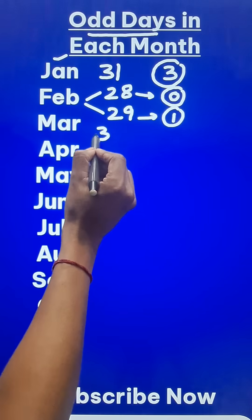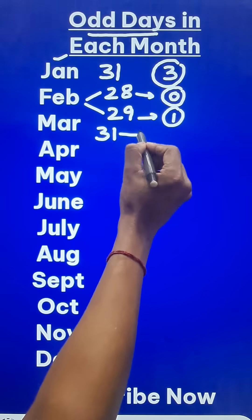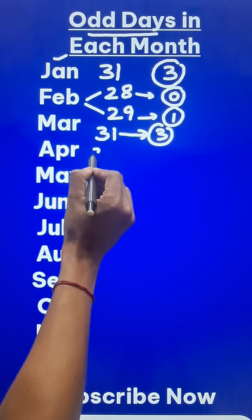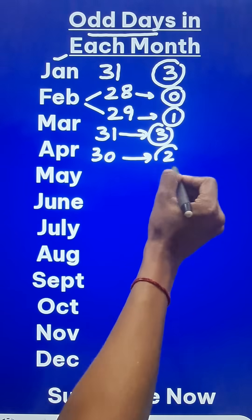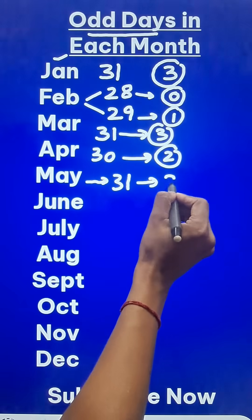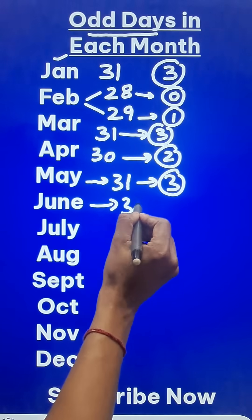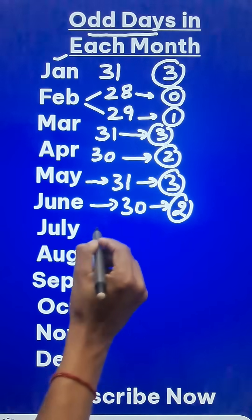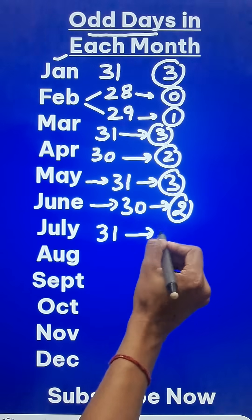In March, there are 31 days and similar to January, it has 3 odd days. April has 30 days, so only 2 odd days. May has 31, so there are again 3 odd days. June has 30, so only 2 odd days. July has 31, so there are 3 odd days.